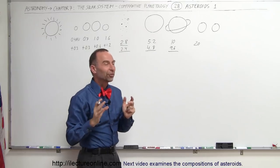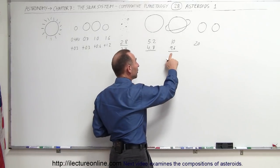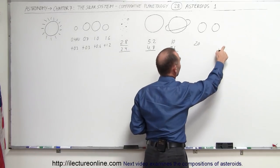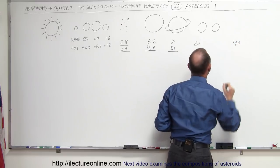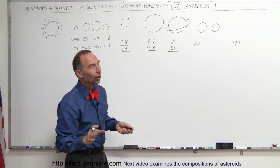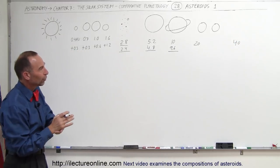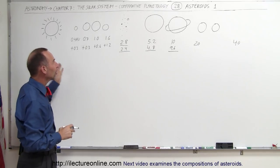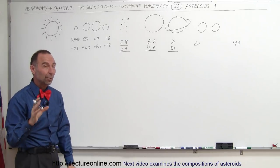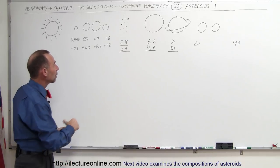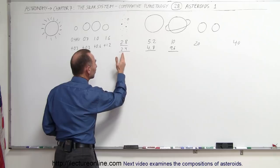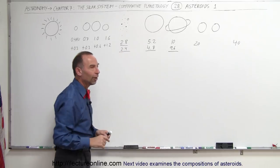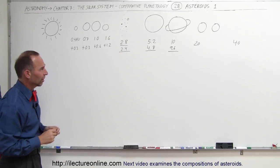Now this is where Bode's law stops because if we now double this number and add it to here, we get 40 astronomical units which is farther away than Neptune. So Bode's law doesn't hold out for the last of the eight planets. But it does hold out for all the planets in between and what's interesting, where we would predict another planet to exist, a planet does not exist there, but the asteroid belt exists there.